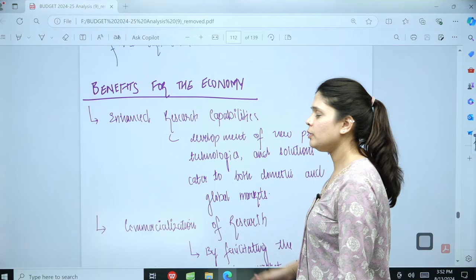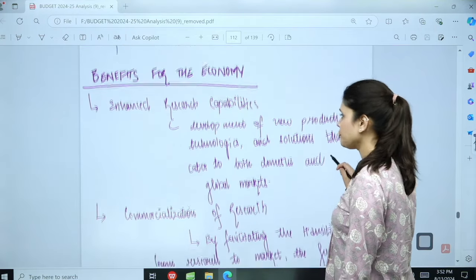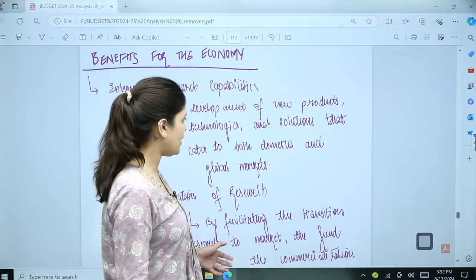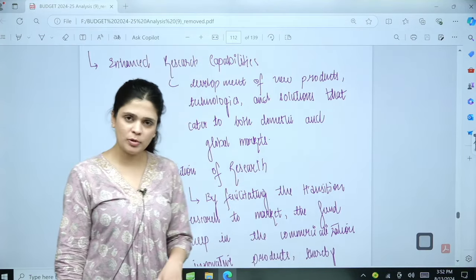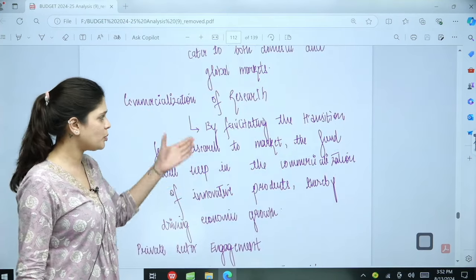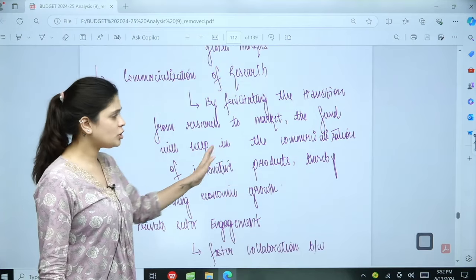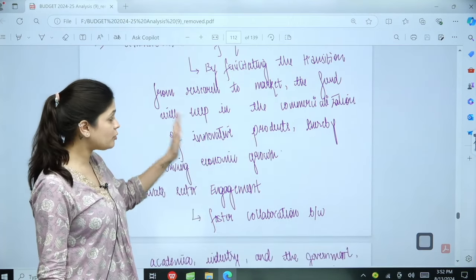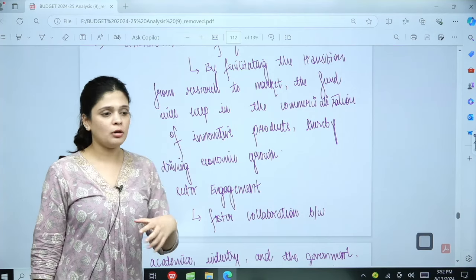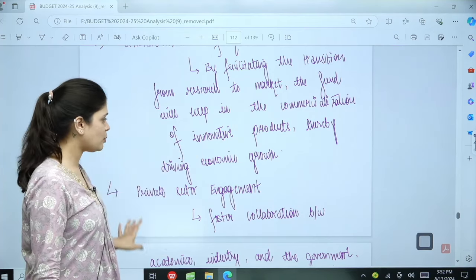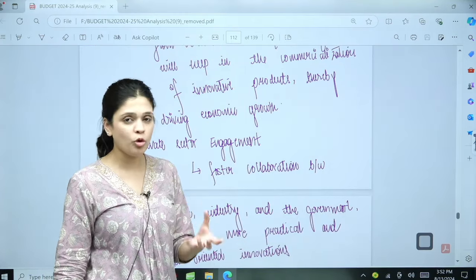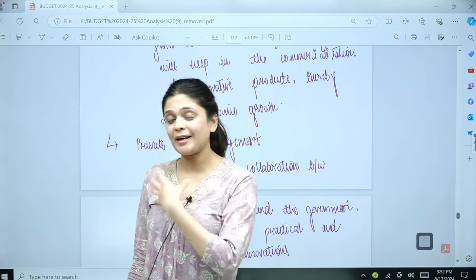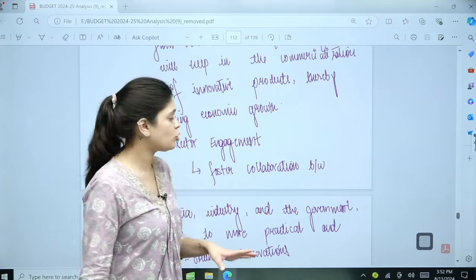What will be the benefits for the economy? Number one, enhanced research capabilities. Development of new production technologies with the help of financial assistance that the government is providing and the solutions will cater to both domestic and global markets. Commercialization of research because by facilitating the transition from research to market, the fund will help in commercialization. That is, be sold for profit of innovative products, driving our economic growth more because if we have more innovative products, the demand also increases, more investment, more production, more economic activities will increase.